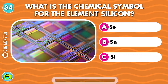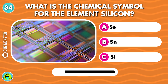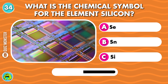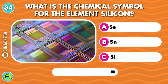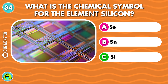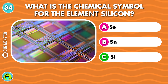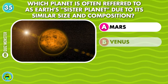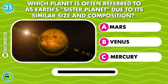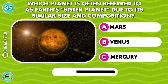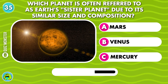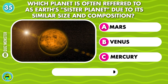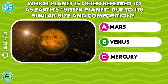What is the chemical symbol for the element silicon? Si. Which planet is often referred to as Earth's sister planet due to its similar size and composition? Venus.